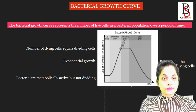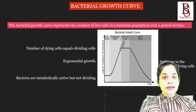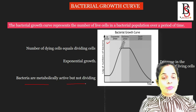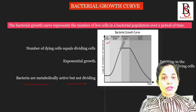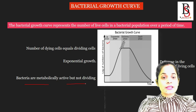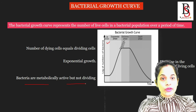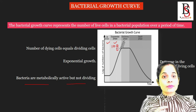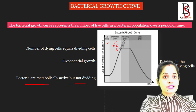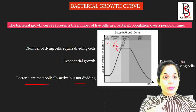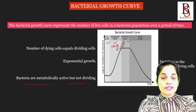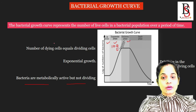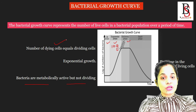In the lag phase, bacteria are trying to adjust to the new environment or to the culture media — they are preparing themselves and do not divide. After the lag phase, the bacteria grow exponentially or logarithmically because of the presence of lots of nutrients in the culture media and space. This phase is known as the exponential phase, also called the log phase. Just after the exponential growth phase, due to overcrowded population and lack of nutrients, growth starts to fall and it reaches the stationary phase. In the stationary phase, the number of live cells equals the number of dead cells — the number of dying cells equals the number of dividing cells.